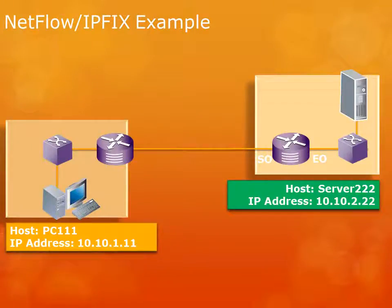I want to go through an example of how NetFlow actually works. NetFlow and IPFix are basically equivalent — NetFlow is the Cisco name and IPFix is the industry standard name; IPFix is based on NetFlow. In our scenario, we have a user whose PC is named PC111 with IP address 10.10.1.11, connecting to a server through a router that has a serial interface and an ethernet interface. The server address is 10.10.2.22.